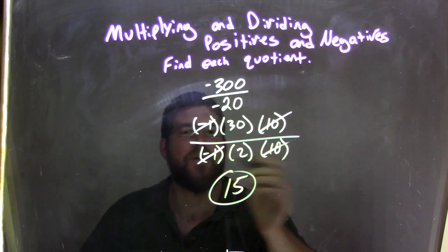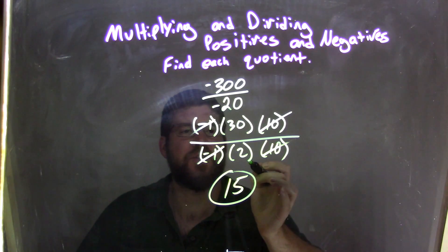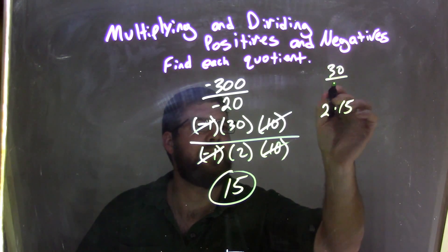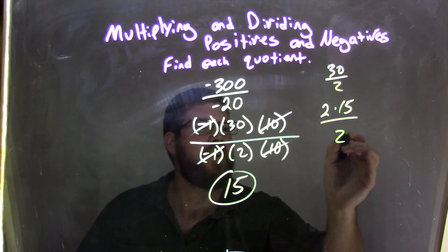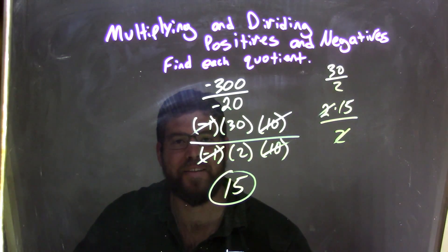We cancel out what we could, and we're left with 30 divided by 2 right there in the middle, and 30 divided by 2, if you really need to see that, that's 30 is 2 times 15, right? So it's 30 over 2, like 2 times 15 over 2, and the 2s cancel, and we're left with 15, which is our final answer.